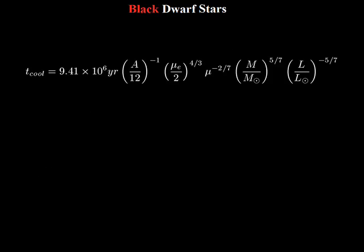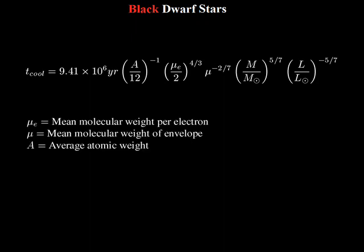Replacing it into our first luminosity equation and integrating with respect to time yields the cooling time to reach a given luminosity. Note that using the luminosity corresponding to the faintest observed White Dwarfs gives about 10 to the 10 years. Meaning, the first White Dwarfs must have formed around 10 billion light years ago.